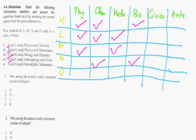Now O and L study Anthropology and Civics, so Civics and Anthropology for O and same here for L. The last direction: O and N study Chemistry and Maths. O is studying Chemistry and Maths, and N is studying Chemistry and Maths. So this is the complete conclusion of what we get from the directions.